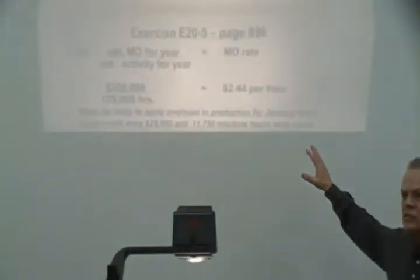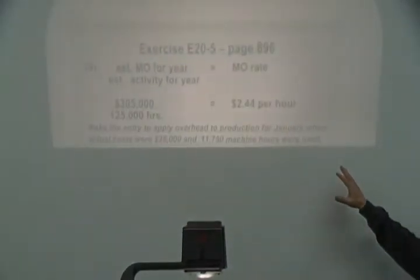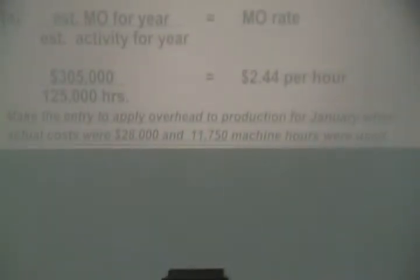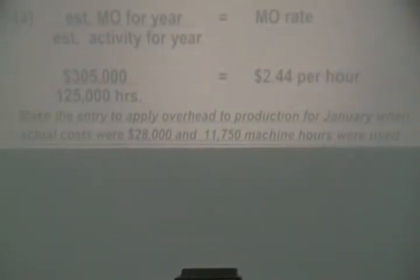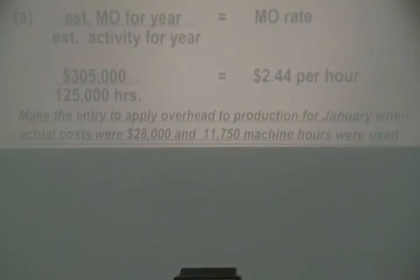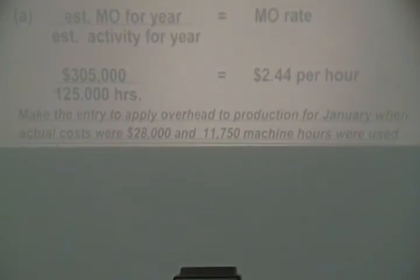These miscellaneous costs — indirect materials, indirect labor, property taxes, depreciation — all lumped into one. About $2.44 every time the machine runs an hour. So we're going to embellish exercise 5. Make an entry to apply overhead into production for January when actual costs were $28,000 and 11,750 machine hours were used.